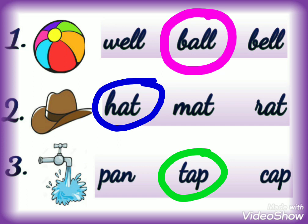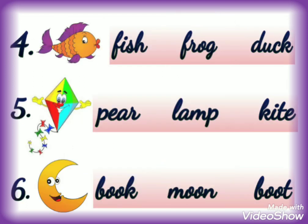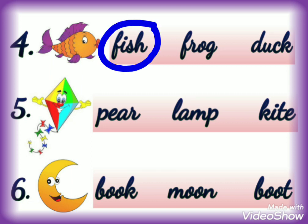That is number 4 — this is the picture of fish. We will read all the options one by one. First option is F-I-S-H, fish — yes, this is the correct answer, so we will circle this word. The next option is F-R-O-G, frog — this is not the right answer. Next option is D-U-C-K, duck — this is also not the correct answer. Now we will move on to the next number.